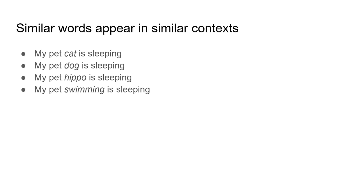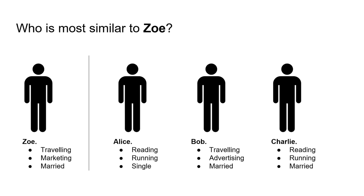The key takeaway is that similar words appear in similar contexts. Next question: we have Zoe and her interests — she likes traveling, marketing, and she's married. We also have Alice, Bob, and Charlie. Take 20 seconds to look at the slide and tell me which profiles are most similar to Zoe. Based on people's interests, who is most similar? Bob, and then Charlie.